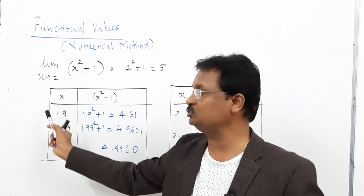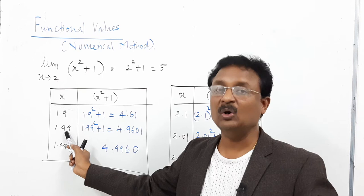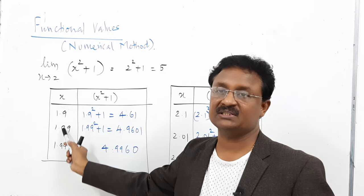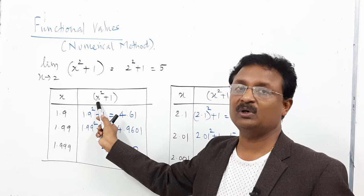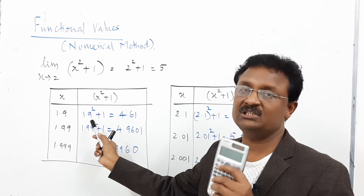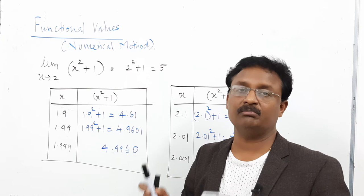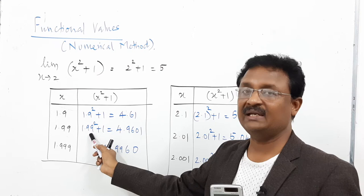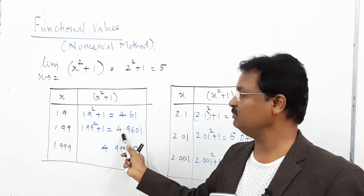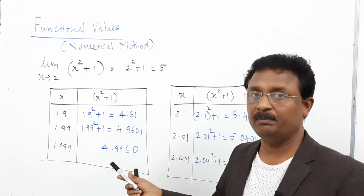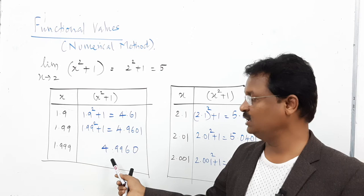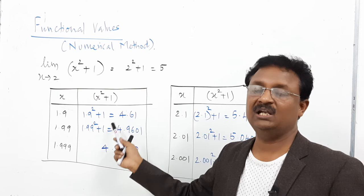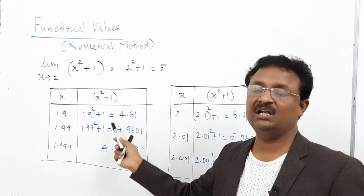Apply the function x² + 1 to each left-table value using a calculator. For 1.9: 1.9² + 1 = 4.61. For 1.99: 1.99² + 1 = 4.9601. For 1.999: 1.999² + 1 = 4.9960. These three values are called left limit values and are all converging very close to 5.